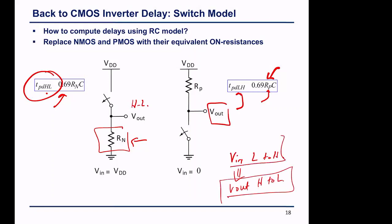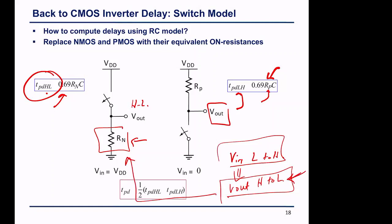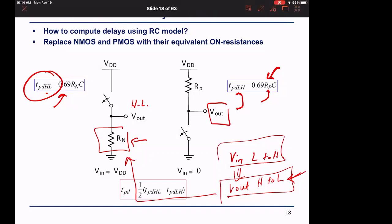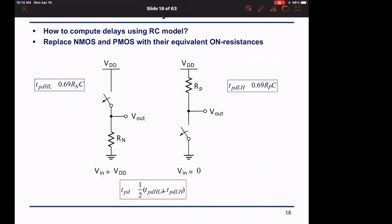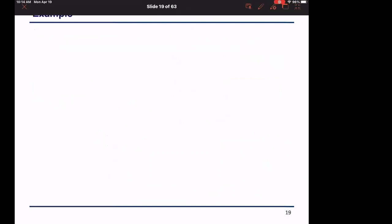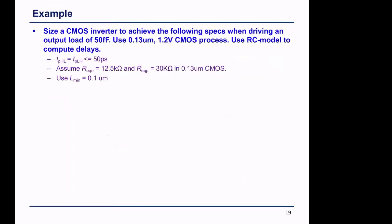Now let us size a CMOS inverter to achieve given specs. The inverter drives a load of 50 fF using 0.13 μm technology where R_EQN (R-square-N) equals 12.5 kΩ and R-square-P equals 30 kΩ, operating at VDD = 1.2 V. We want TP_HL equal to TP_LH equal to 50 ps.